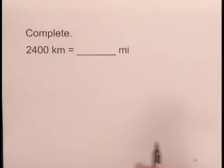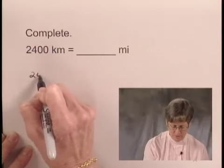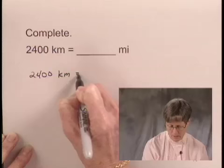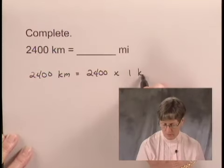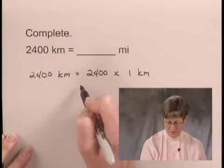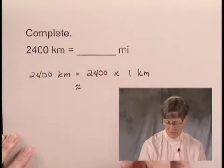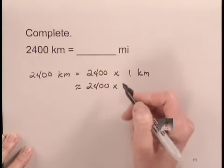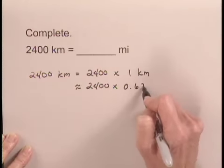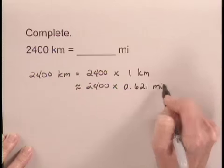We'll write 2,400 kilometers as 2,400 times 1 kilometer. The conversion factor then tells us that this is approximately equal to 2,400 times 0.621 miles.